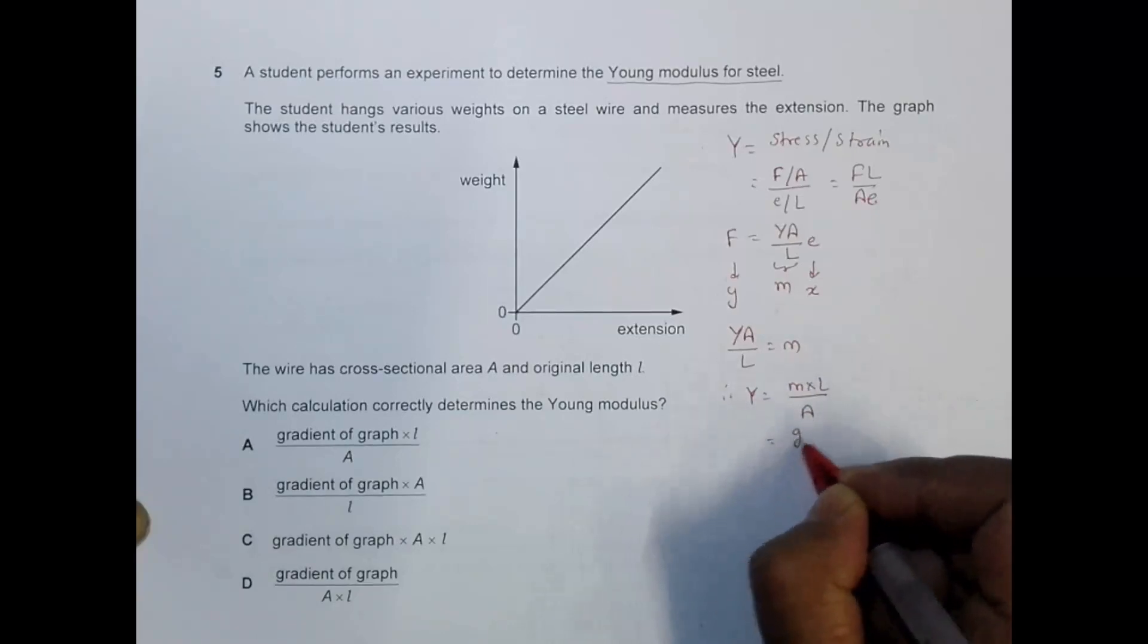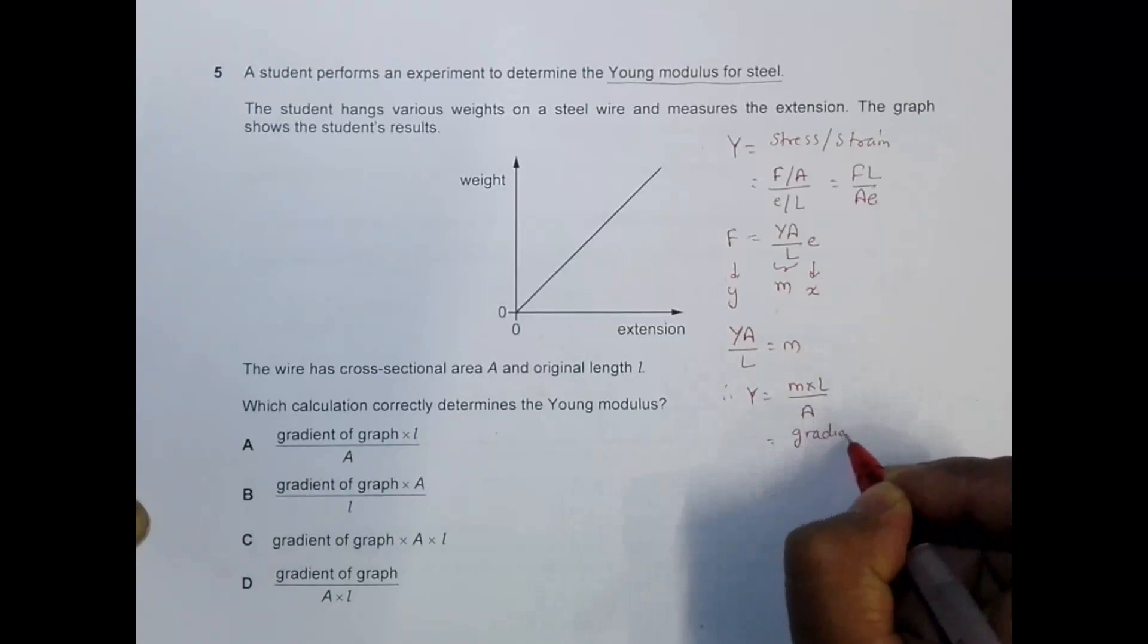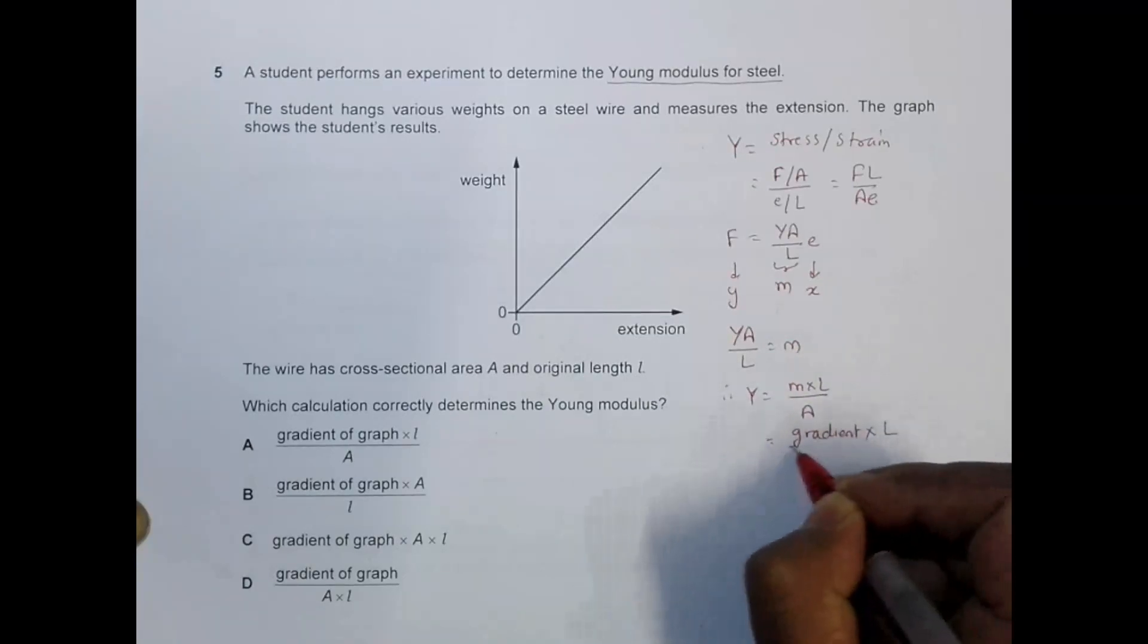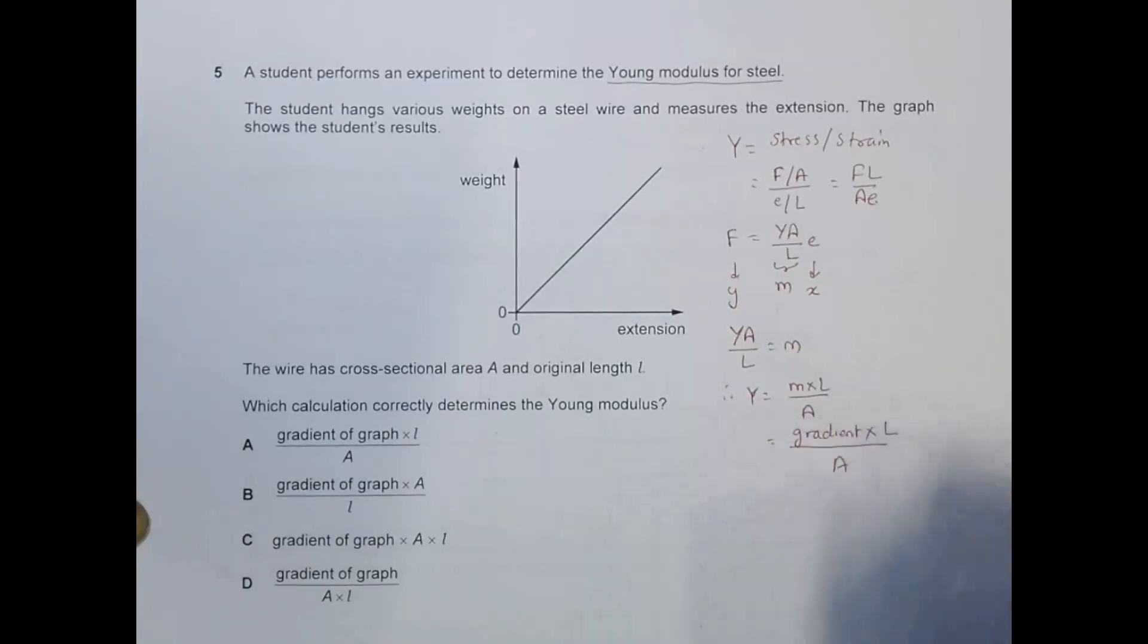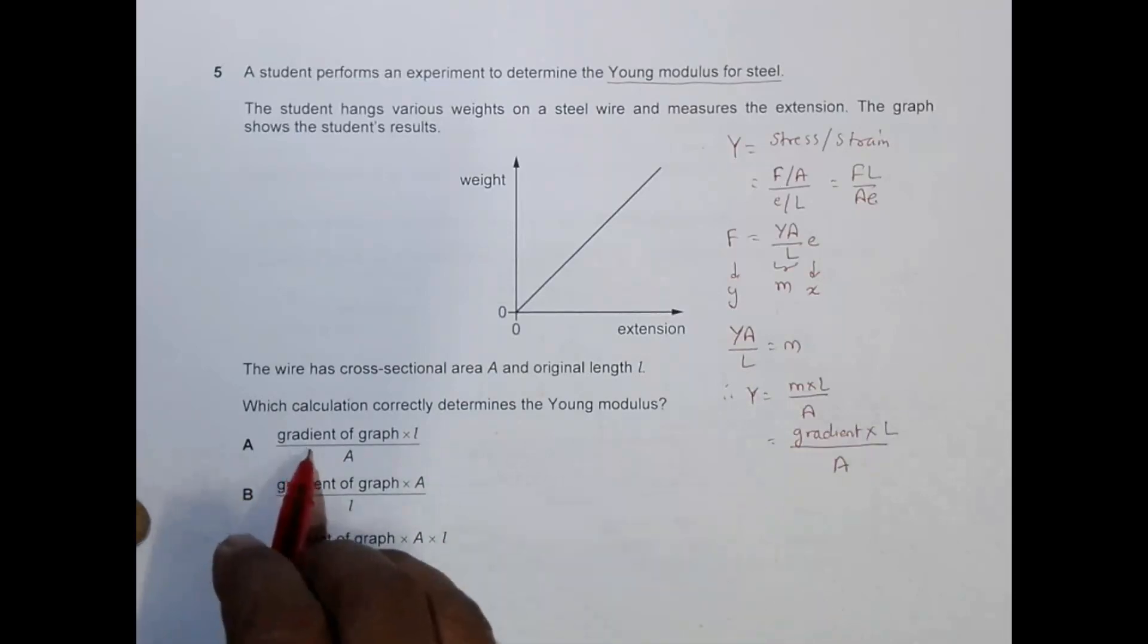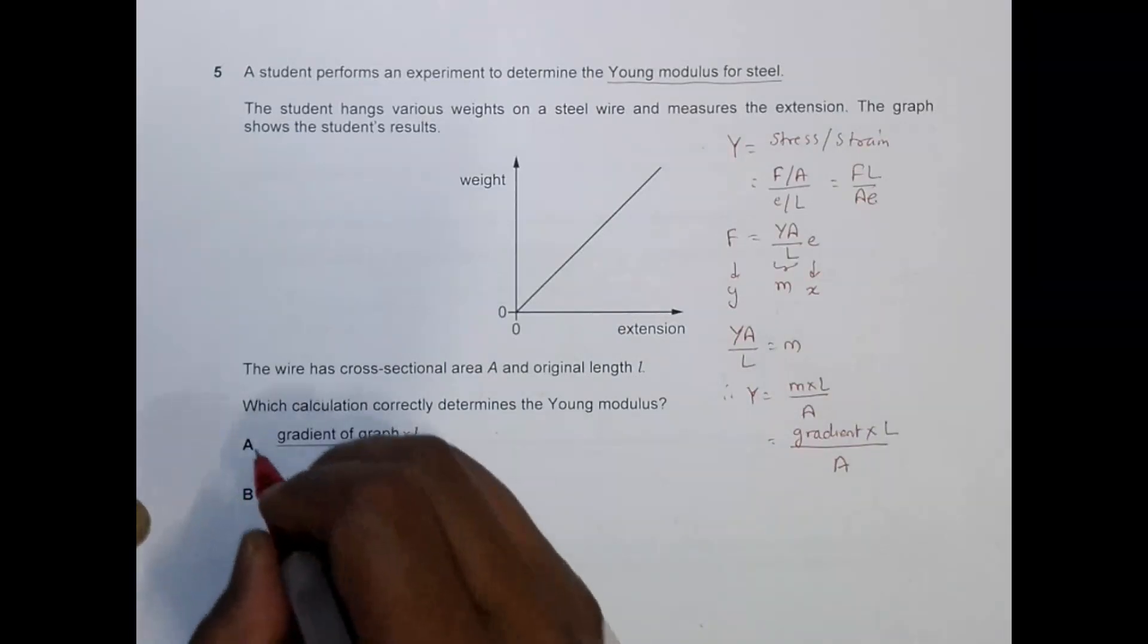So the gradient M equals gradient times L by A. When you look at the choices, choice number A corresponds to this answer, so choice A should be the correct answer.